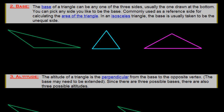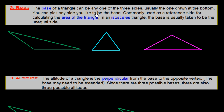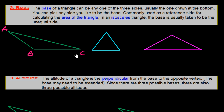Now we talk about the base. The base of a triangle can be any one of the three sides, usually the one drawn at the bottom. You can pick any side you like to be the base. It is commonly used as the reference side for calculating the area of a triangle. You could take BC as base, AB as base, or AC as base.